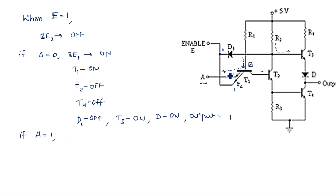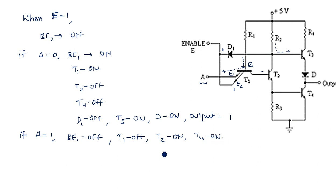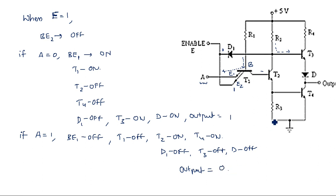When enable is equal to 1 and A is equal to 1: the base-to-emitter 1 junction is also off, so both junctions are off and current flows to T2, making T1 off and T2 on. As T2 is on, T4 is on. Diode D1 is still off. T3 is off. With T4 on, the output is equal to logic 0 because the output is connected to ground through T4.